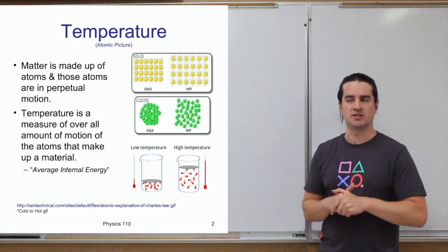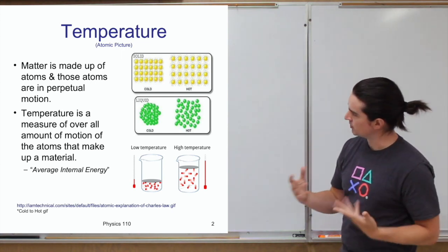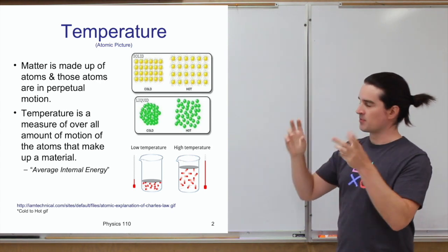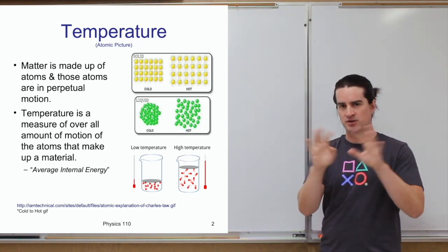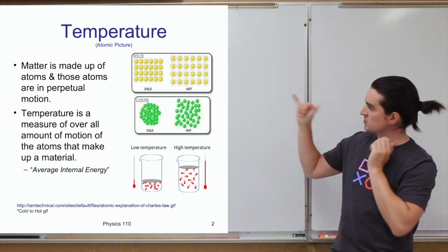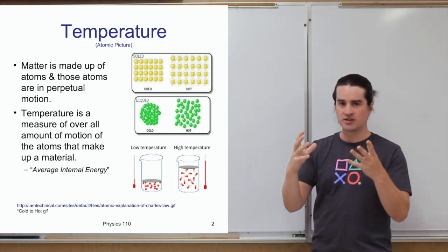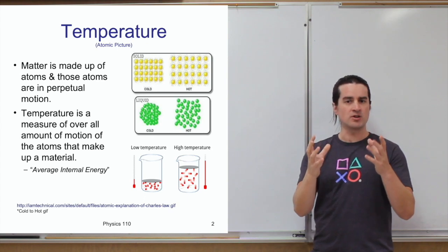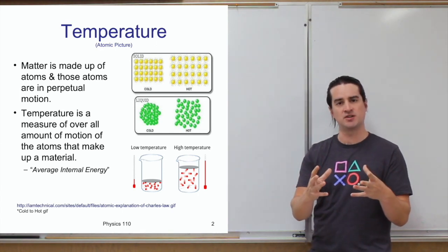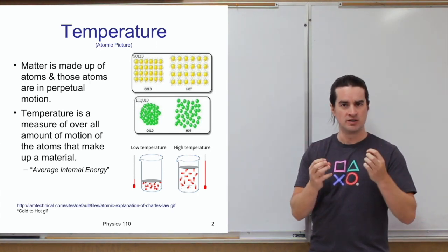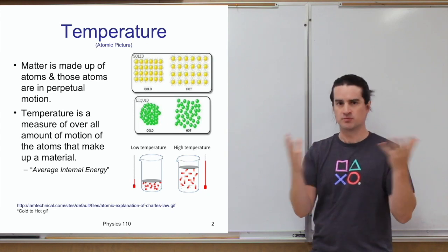Temperature is a measure of that average energy, that overall sort of motion. We could imagine the difference between something cold and hot, like a solid. A solid is just atoms stuck and not able to move more than jiggling within the confines of a structure. When the solid is cool, the atoms are jiggling but not a whole lot. Versus if you increase the temperature, each one of those atoms moves around more, and because of that increased motion, they tend to spread apart — they need more room.